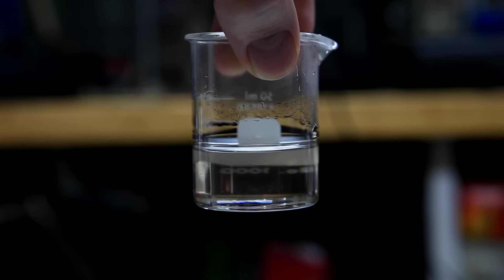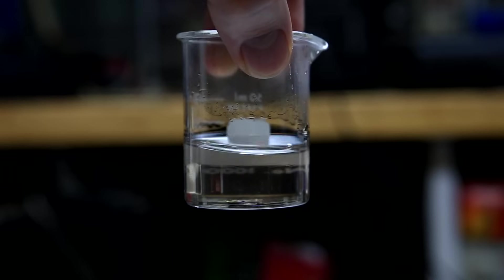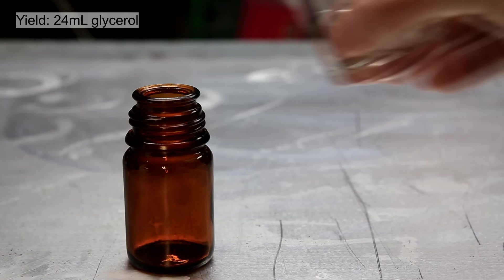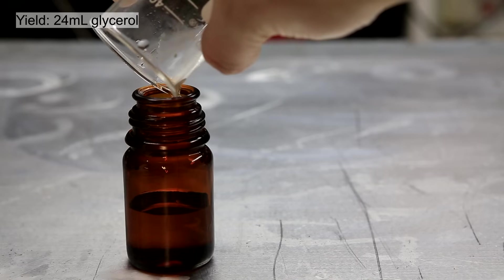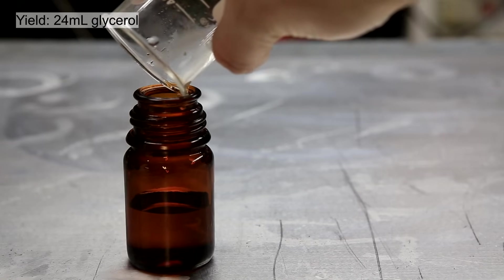In this shot, it's not as viscous because I just removed it from heat. The glycerin was then transferred to a small amber bottle for storage. The final yield of glycerol was about 24 milliliters.